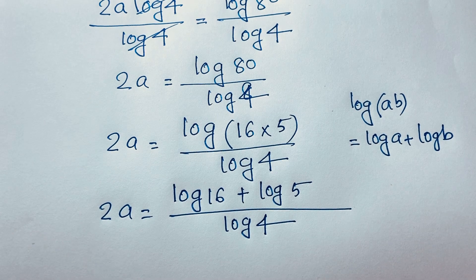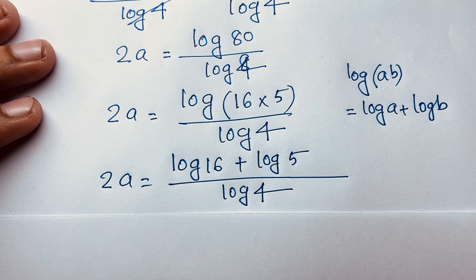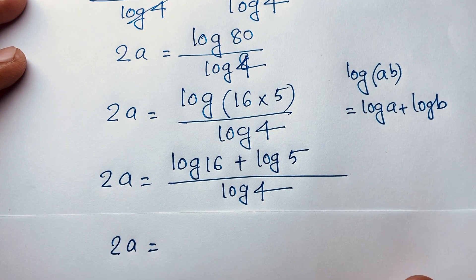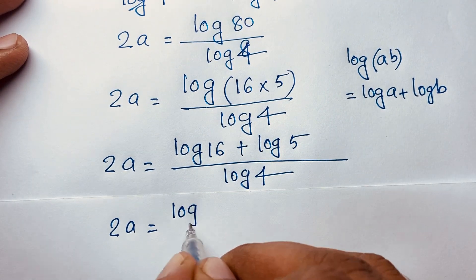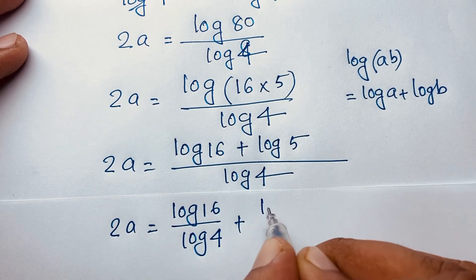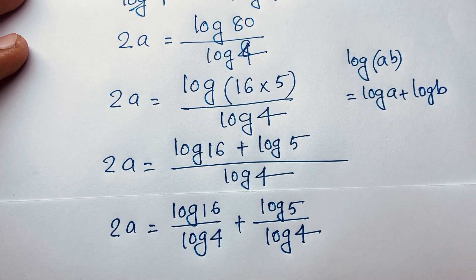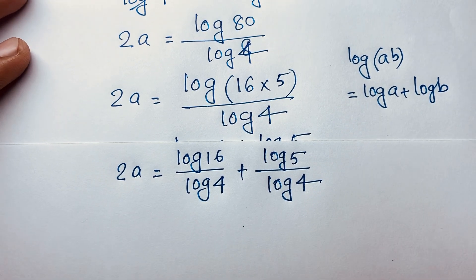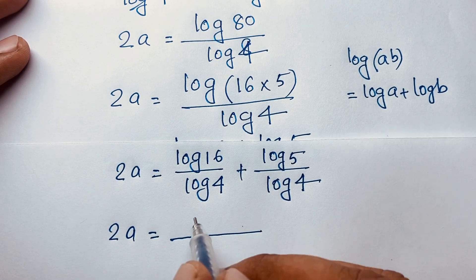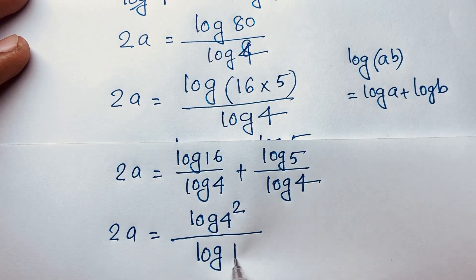Separating the fraction, we get 2a equals log 16 over log 4 plus log 5 over log 4. Now, log 16 can be written as log 4 to the power 2 over log 4. I'll solve this expression step by step.